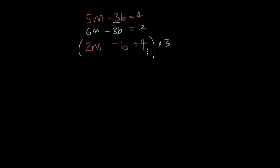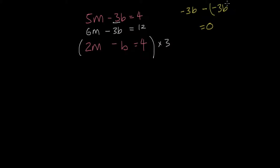So you have to multiply the right hand side of the equation as well. Now we have both the b's with the same coefficient. I'm just going to write the b part here. We have negative 3b and a negative 3b, and somehow we want to get this to equal 0. And in order to do this, I have to subtract. Because when I have negative negative 3b, that becomes positive, and negative 3b plus 3b gives me 0.